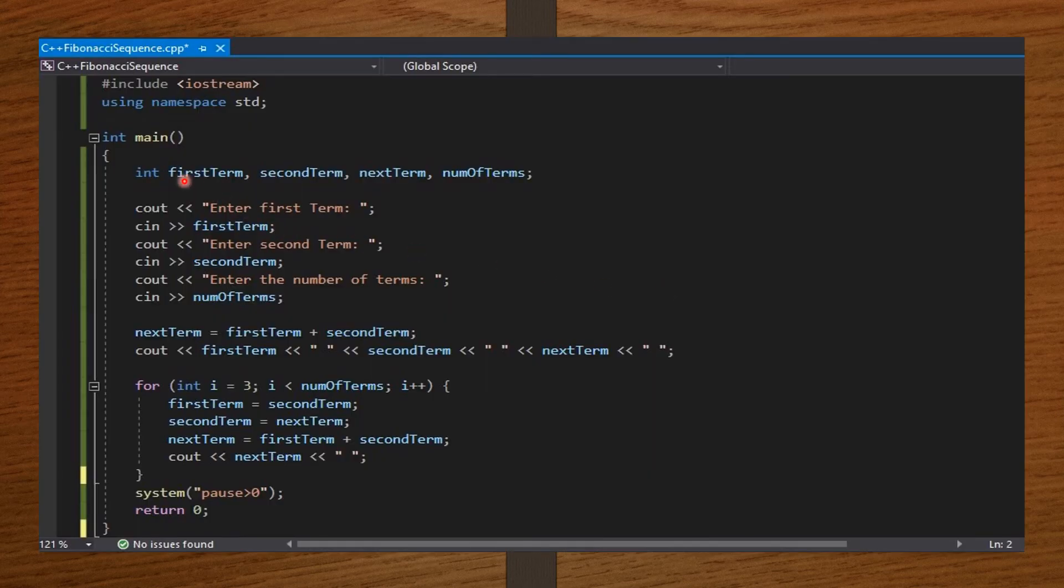In the int main function, I declare the first term, second term, next term, and the number of terms as integers. Then, I ask the user to enter the first term, I take the integer value, enter the second term, I take the integer value, enter the number of terms, and I take the integer value as well. I then generated my next term, and then printed out the results. Now, I have my for loop, which will repeatedly generate the next terms using the concepts I already explained.